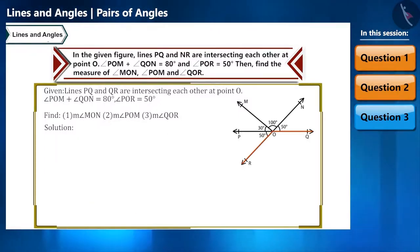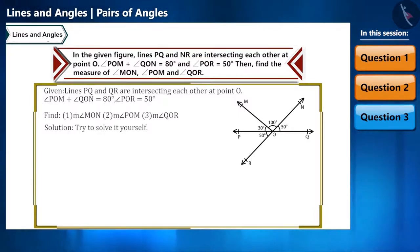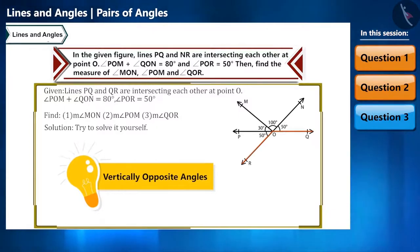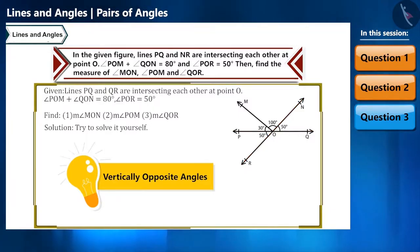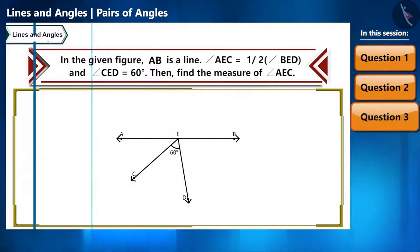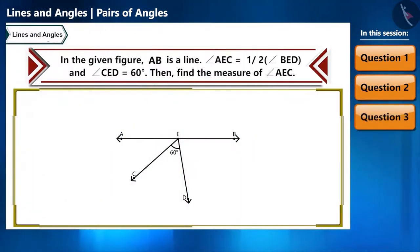We got angle POM to be 30 degrees. Now for the last angle, angle QOR — the hint is that angle QOR and angle PON are vertically opposite angles, so you should be able to find its measure yourself.